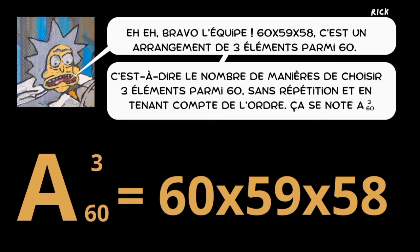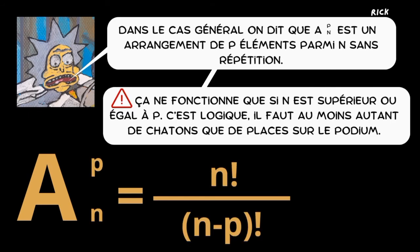60 times 59 times 58 is an arrangement of three elements among 60 — in other words, the number of ways to choose three elements among 60 without repetition and taking into account the order. In general, we say that A of p among n is an arrangement of p elements among n without repetition. It only works if n is greater than or equal to p.